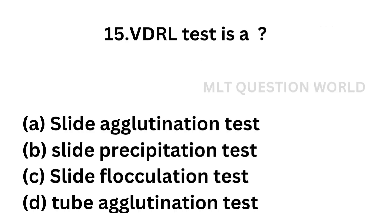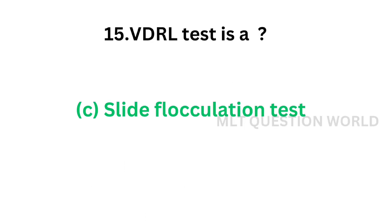Question number 15. Widal test is a: Option A, slide agglutination test; Option B, slide precipitation test; Option C, slide flocculation test; Option D, tube agglutination test. Widal test comes under which of the following category? The correct answer is Option C, slide flocculation test. Widal test is done for syphilis and it is a slide flocculation test.